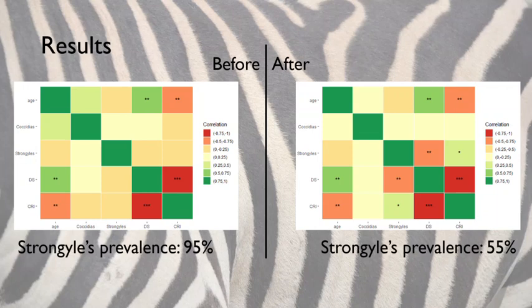There is no correlation between parasite burden and behaviors before treatment. Nonetheless, subordinates carry more Strongyles than dominants and show a higher risk of contamination through social behaviors after treatment. Coccidia burden is independent from other variables; however, during the entire study, coccidia burden dynamics were significantly opposed to Strongyle burden dynamics.